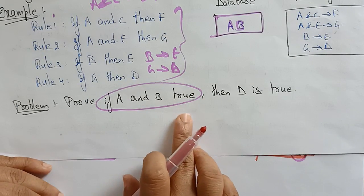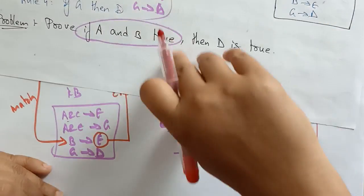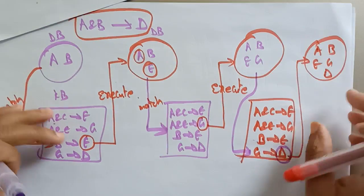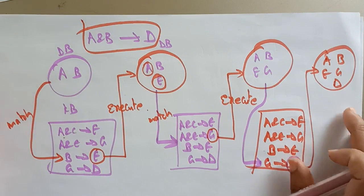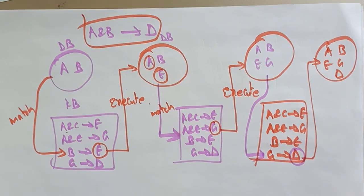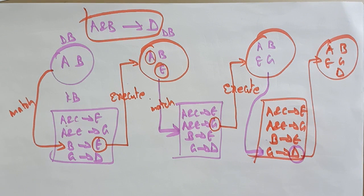Whenever it is executed in the database it means it is true. This is the way of doing forward chaining. In the next video I will take one more example to clarify your doubts. Thank you.